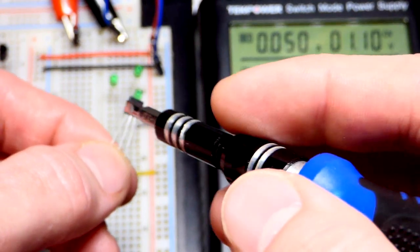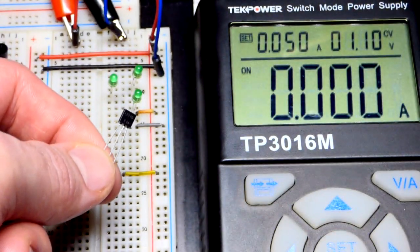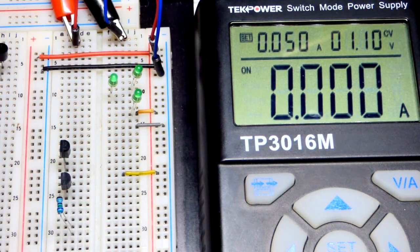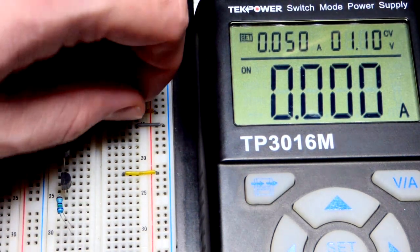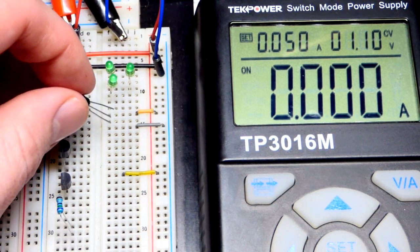And the gate is actually how you control how well it conducts. It naturally conducts, unlike the bipolar junction transistor. And the gate actually makes it conduct a little less.